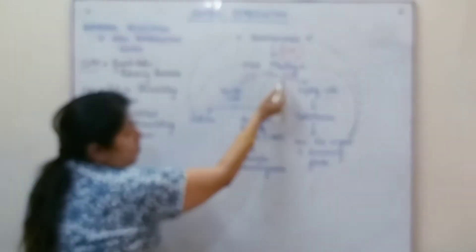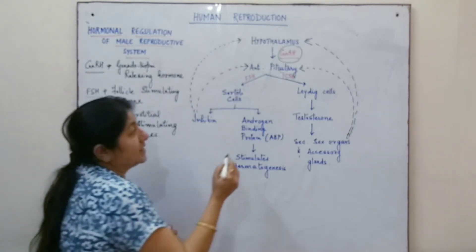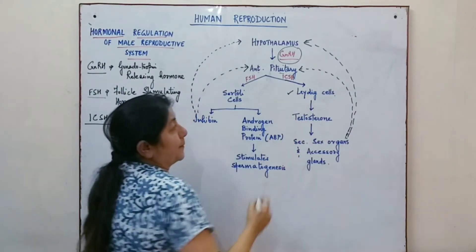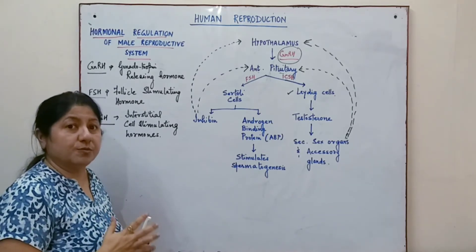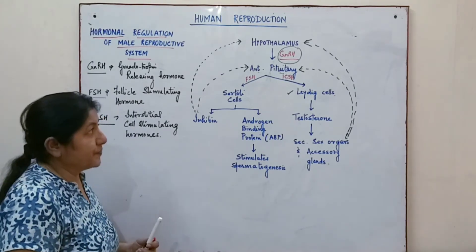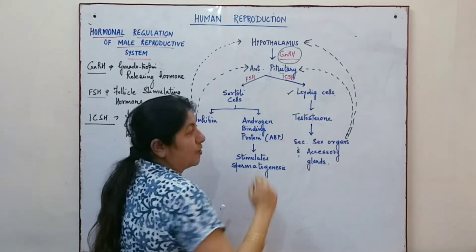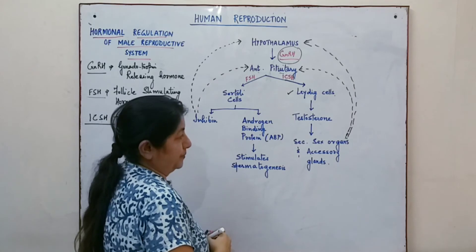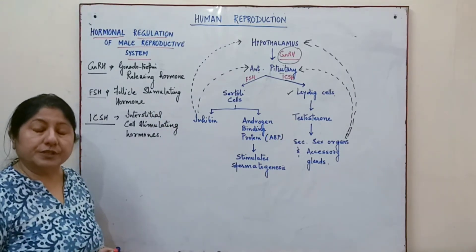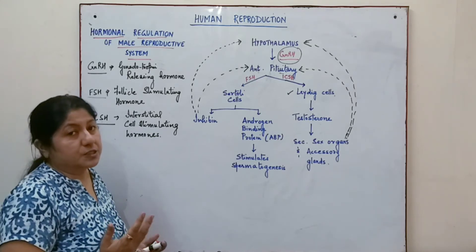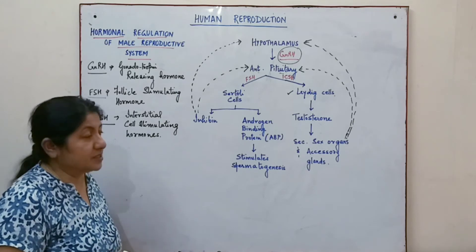The ICSH, or interstitial cell stimulating hormone, acts on the Leydig cells. These Leydig cells are present in the seminiferous tubule in the interstitial region and they are responsible for the release of testosterone hormone. This testosterone hormone is important for the production of sperm, i.e., it is responsible for spermatogenesis.